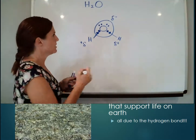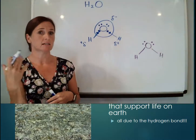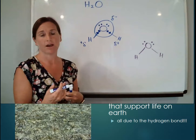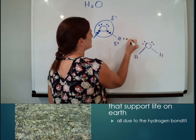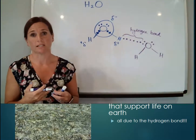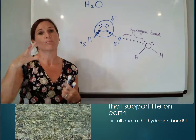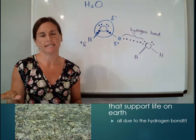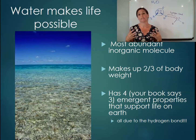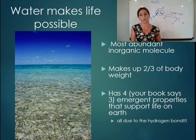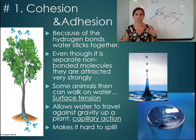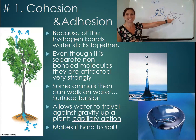What happens is another water molecule comes up near the first one, and the partially positive hydrogen starts to attract the negative side of the neighboring oxygen. This attraction is called the hydrogen bond. These hydrogen bonds are what make water so incredible and provide for the four emergent properties of water — properties that emerge when you look at water that you maybe never would have predicted based on its general structure.